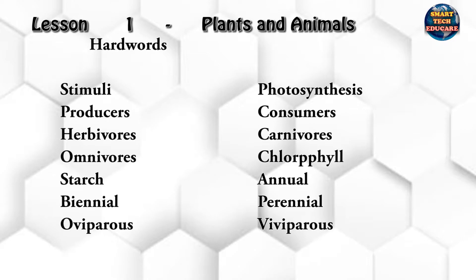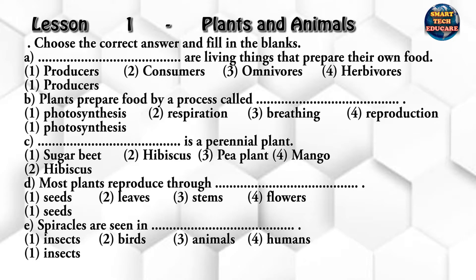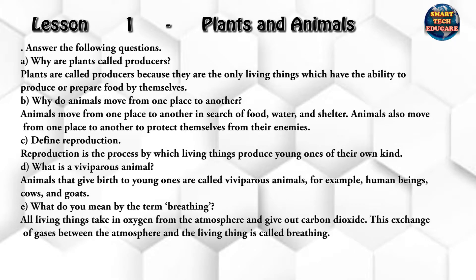Viviparous. Choose the cartons and fill in the blanks. Plants are producers — living things that prepare their own food. Plants prepare food by the process called photosynthesis. Hibiscus is a perennial plant. Most plants reproduce through seeds. Spiracles are seen in insects.